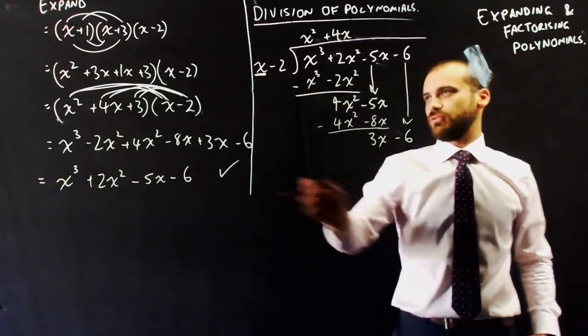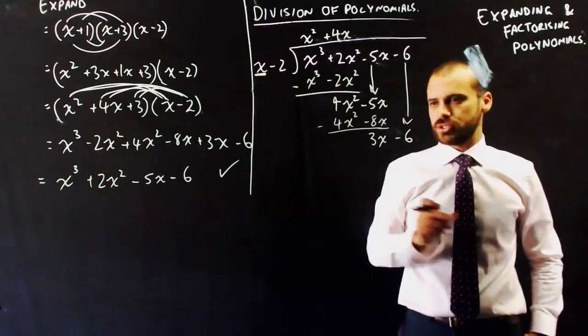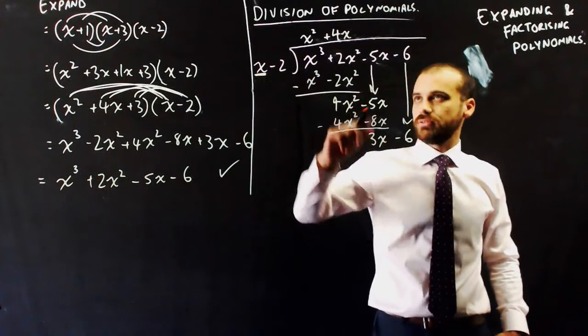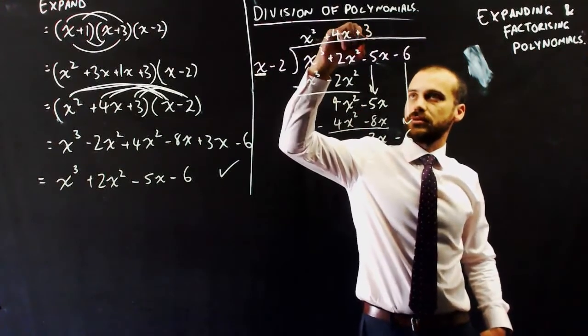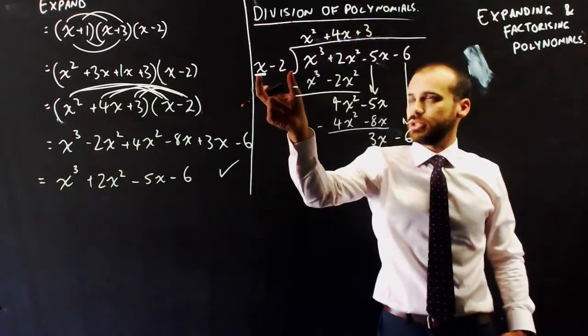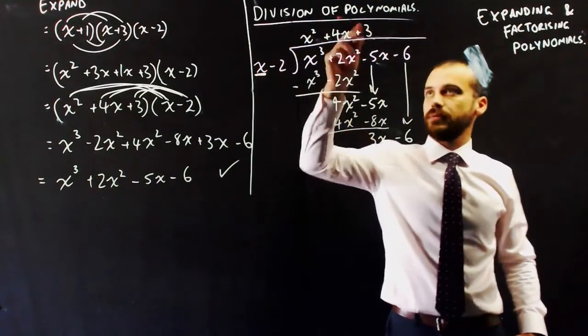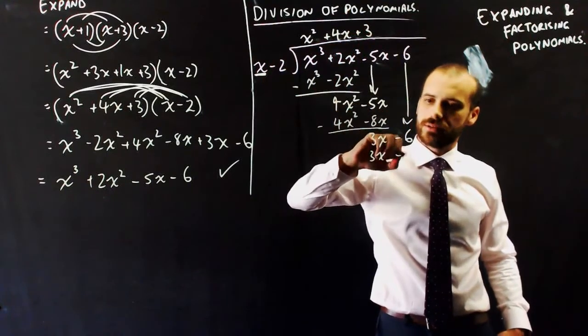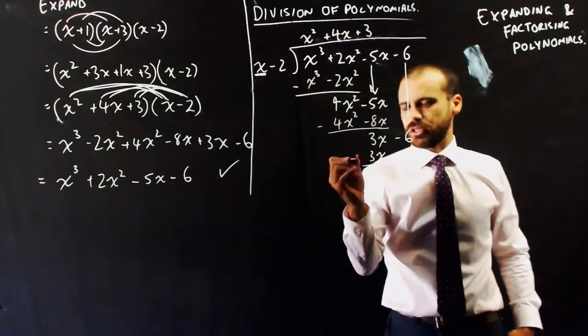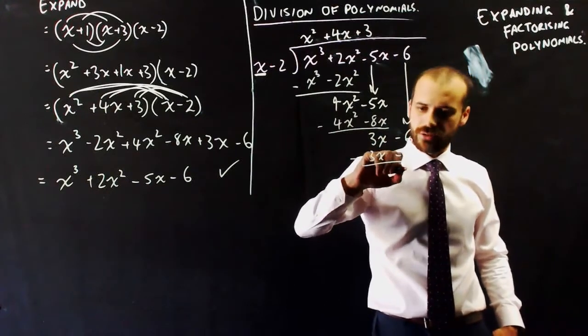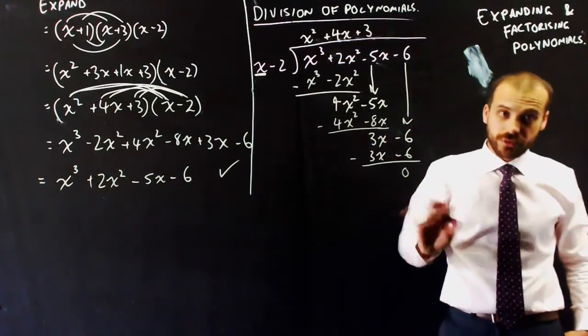Now, we're taking 3x minus 6, and we're dividing it by x minus 2. So, 3x divided by x will give us 3. 3 times x minus 2 will give us 3x minus 6. We subtract 0, negative 6, 0. There's no remainder here.